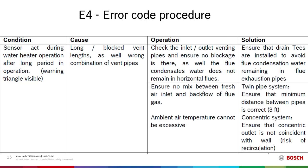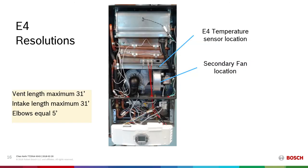Make sure those are clear. Also, make sure there is proper clearance between the terminations of the intake and the exhaust. Those terminations must be a minimum of three feet apart to ensure that no exhaust is being drawn back in with the fresh air. E4 resolutions: potentially vent length. Make sure we are within our maximum vent length parameters — 31 feet on the intake plus 31 feet on the exhaust, with each elbow reducing that 31 feet by 5 feet.